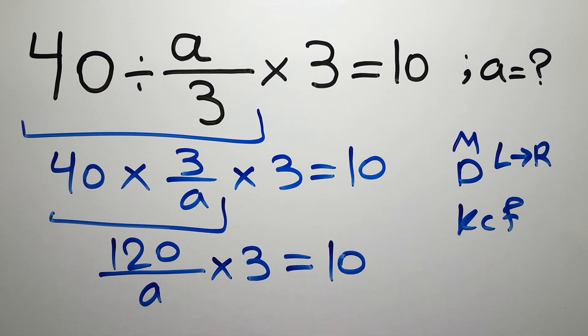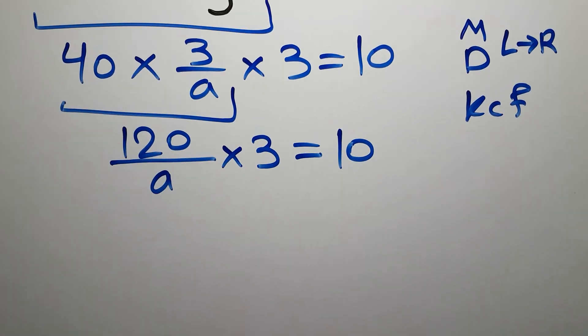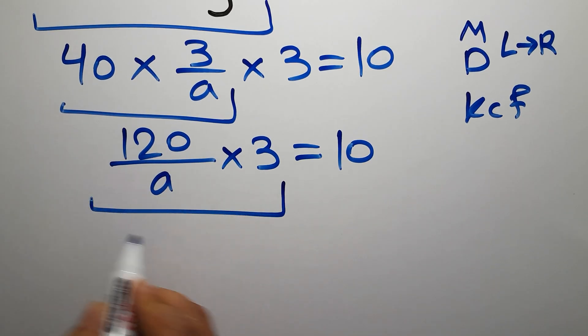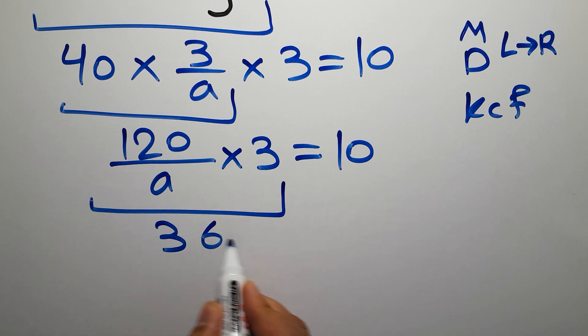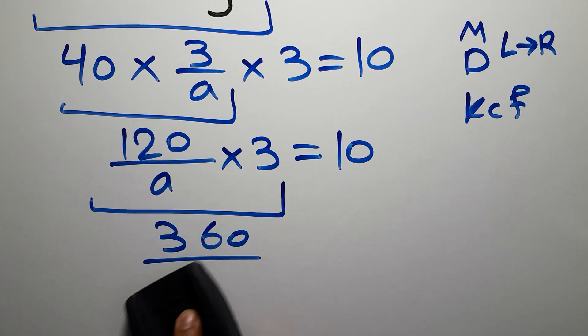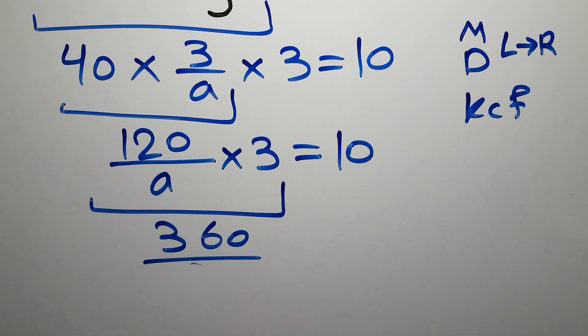Now, 120 times 3 gives us 360, so 360 over a equals 10.